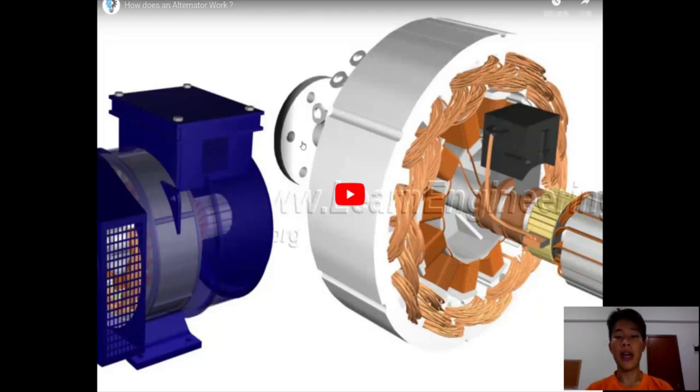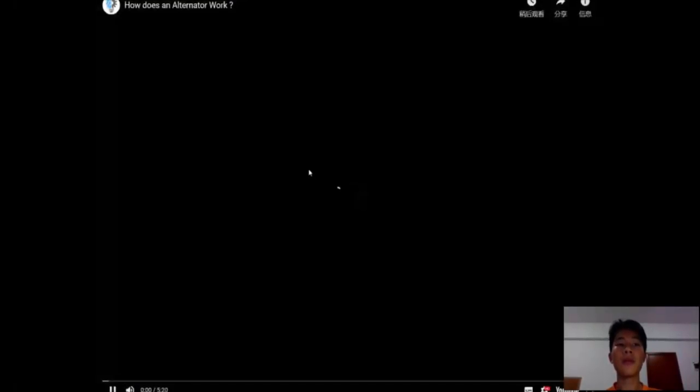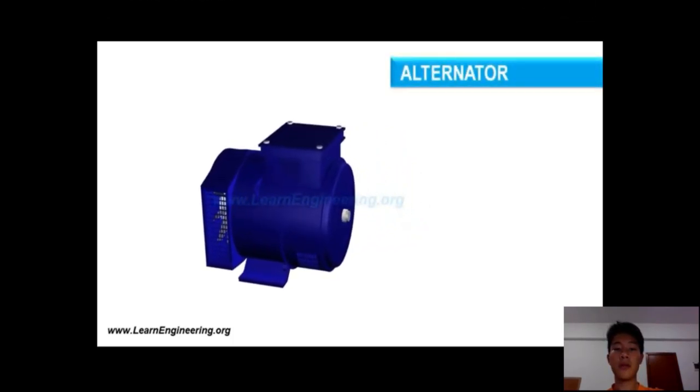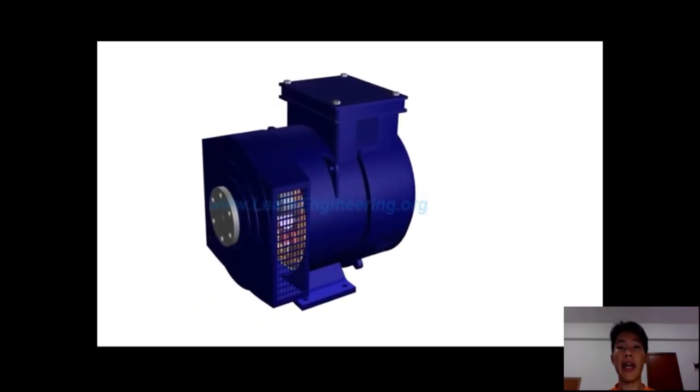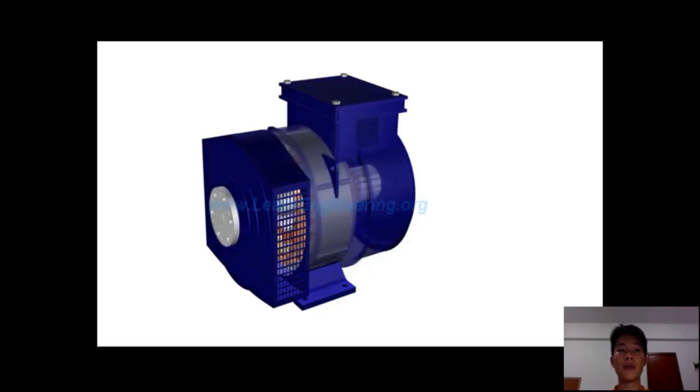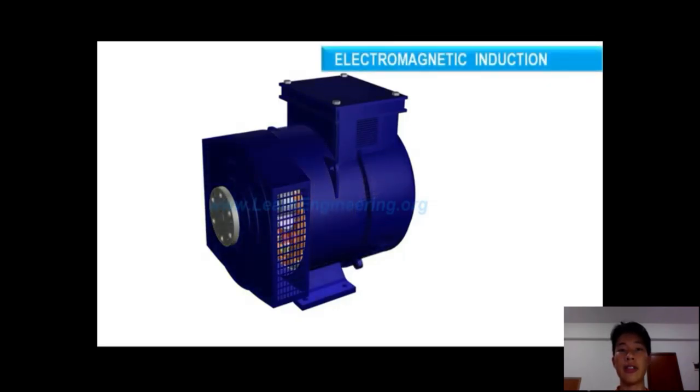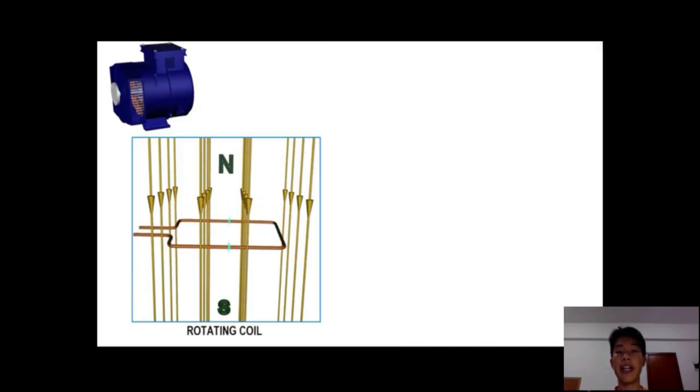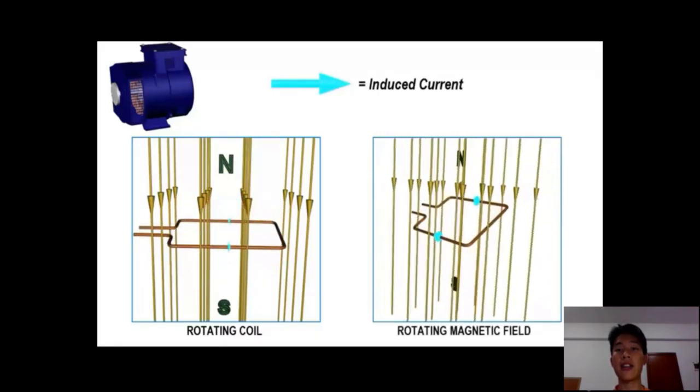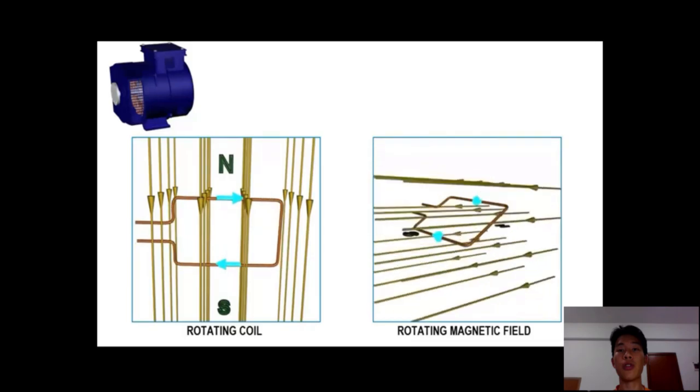Now we are going to see a video, and we are going to talk about the principle of the AC generator, the alternator. How does an alternator work? It is capable to generate AC power at a specific frequency. It is also called a synchronous generator. Electricity is produced in alternators by electromagnetic induction. To generate electricity in the coil, either the coil should be rotated with respect to magnetic field, or a magnetic field should rotate with respect to the coil.